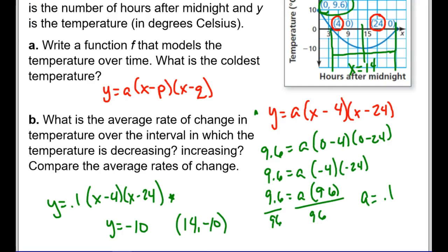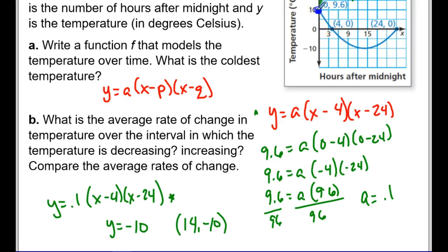Now for part B: average rate of change, which you'll be seeing a lot. Average rate of change is an easier way to compare parts of a function — it's really the slope between two points. We can't just say 'find the slope' of a curve because it doesn't have a constant slope, but we can find the slope between two specific points, which is the average rate of change.